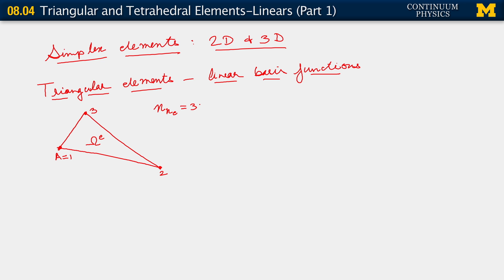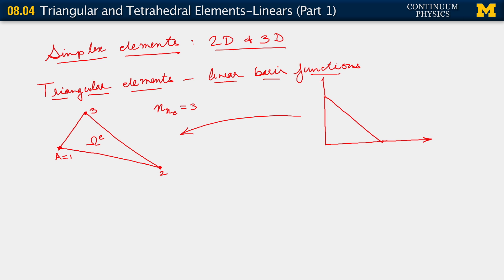We take the same approach that we took in the case of quadrilateral elements, where this triangle is thought of as being obtained as a mapping from a parent domain. Since it's a triangle, we obtain it from a triangle also in this parent domain. It's also two-dimensional, so we have coordinates C1 and C2.